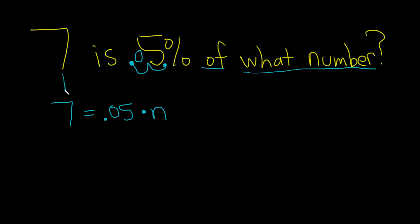So 7 means equals, 5% in decimal form is 0.05, of means times, and then the number is n.